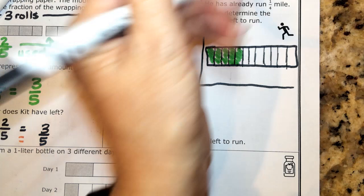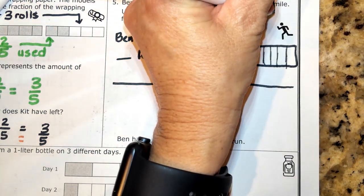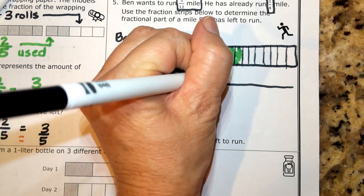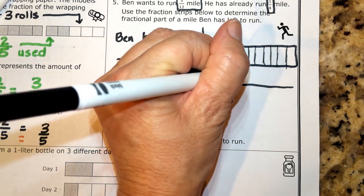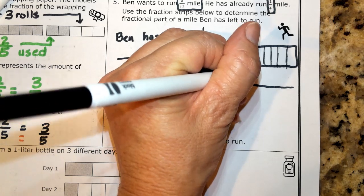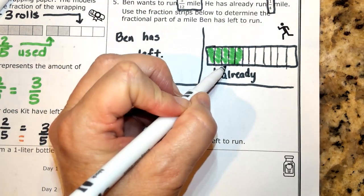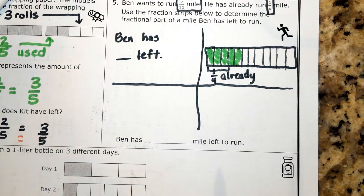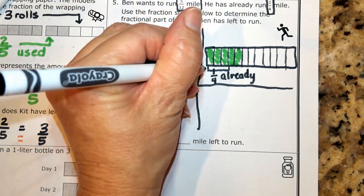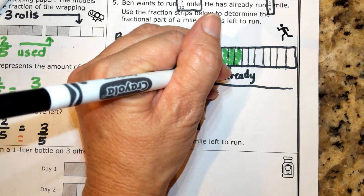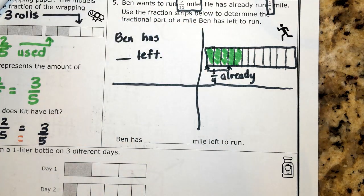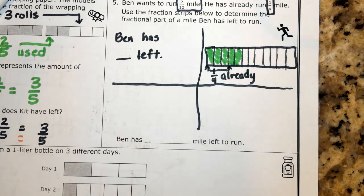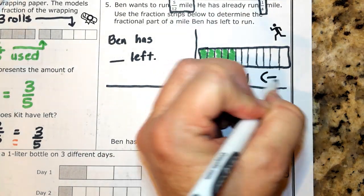It says that he's already run a fourth, so he's already ran a part of that. We can just guess how much that is. We have to kind of guess because we don't have common denominators. So what we're going to need to do is try to find the missing part. And anytime we're trying to find the missing part, we're going to be subtracting.